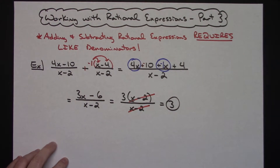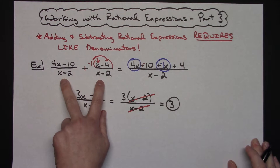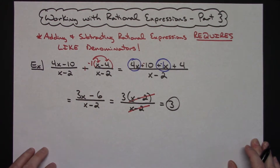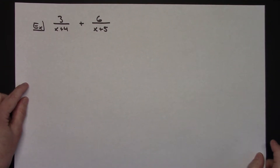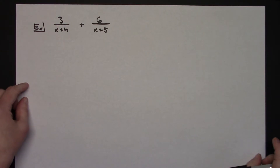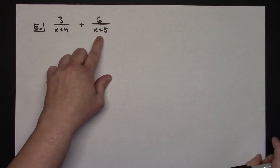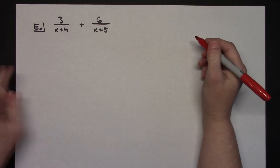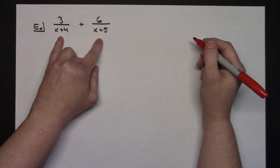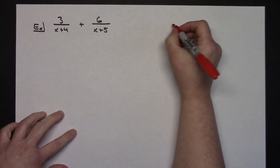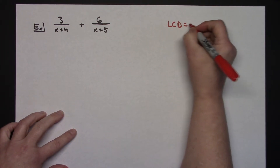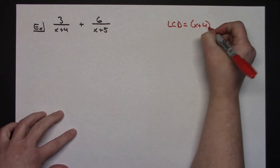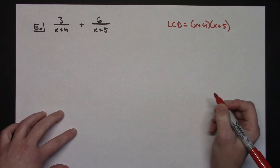A straightforward example of dealing with rational expressions when you already have common denominators. Now let's go to one where you do not have common denominators. This one has 3 over x plus 4 added to 6 over x plus 5. The first thing I'm going to do is figure out what the least common denominator needs to be. I'll arrive at that by taking the two denominators and multiplying them together — so x plus 4 times x plus 5 is my least common denominator.